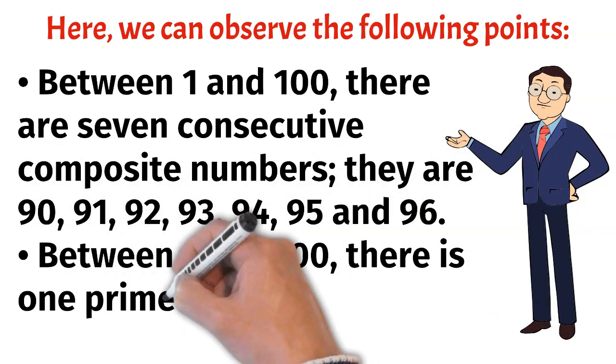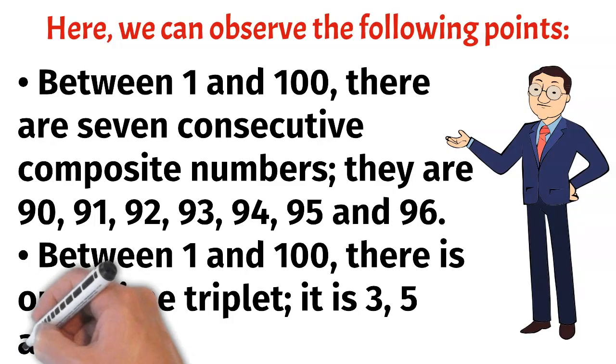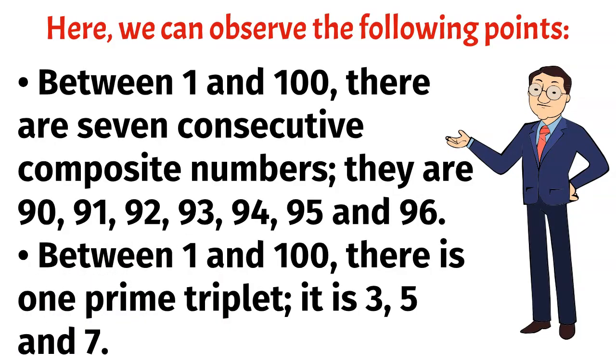Between 1 and 100 there is 1 prime triplet, it is 3, 5 and 7.